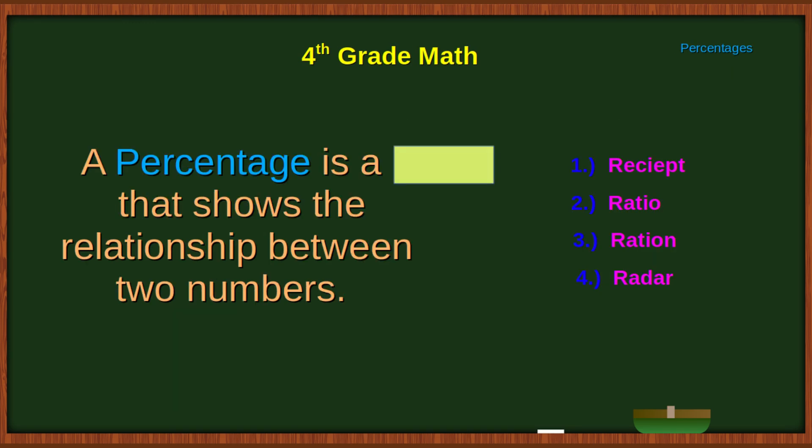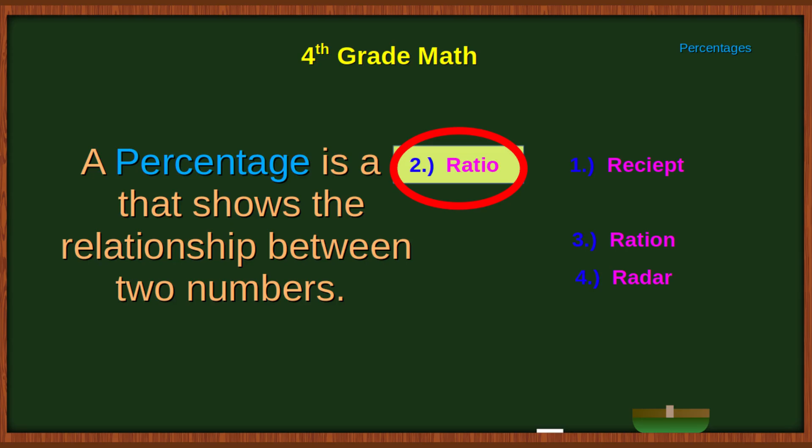A percentage is a blank that shows the relationship between two numbers. Ratio. Number 2, ratio. A percentage is a ratio that shows the relationship between two numbers.